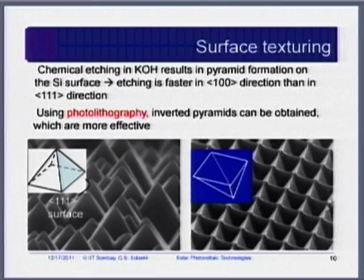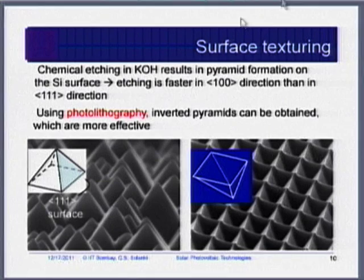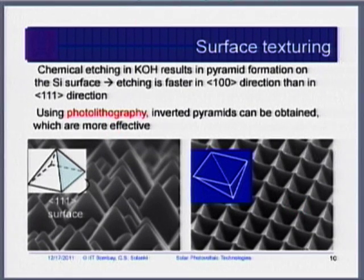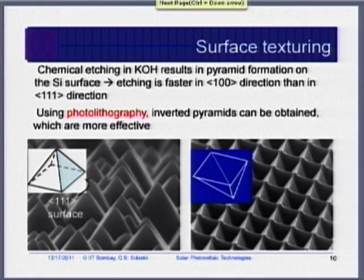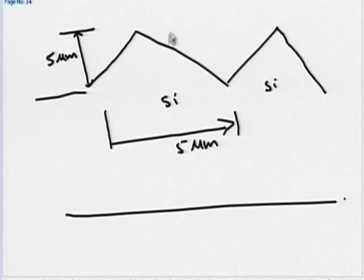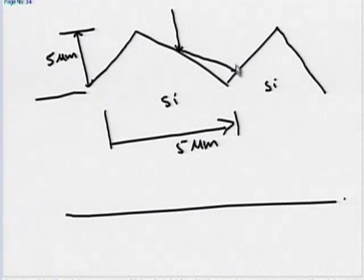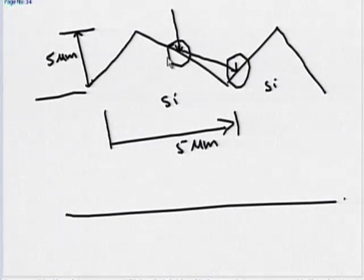There are different types of texturing: regular pyramids and inverted pyramids. Inverted pyramids require photolithography. With texturing, light that hits one facet and is not absorbed gets reflected onto another facet, giving it a second chance to be absorbed. This reduces reflection. The concept is called light trapping.